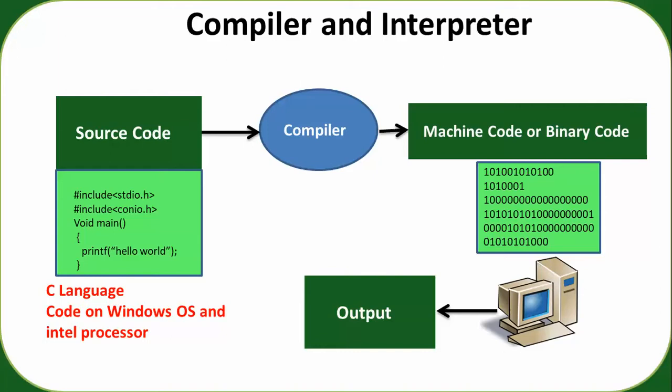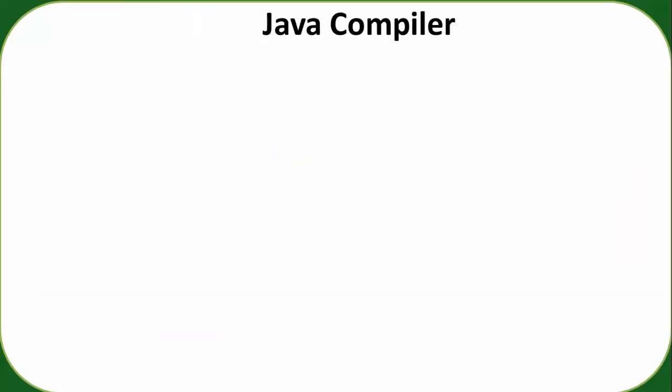The problem with C programming code is that if you compile a C program on Windows with an Intel processor architecture, it will generate machine code and execute correctly. But if you try to run that executable on Unix or another processor architecture, there will be an error — there is platform dependency because the compiler generates machine code specific to the physical machine architecture.